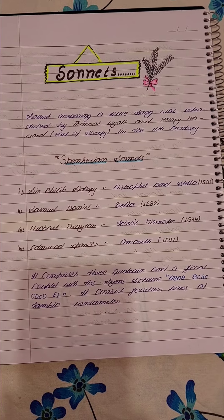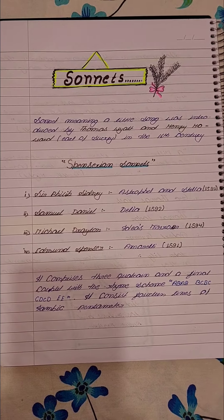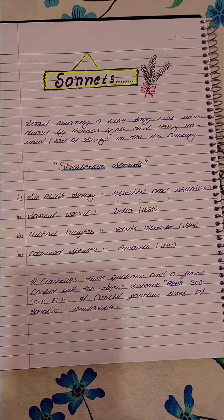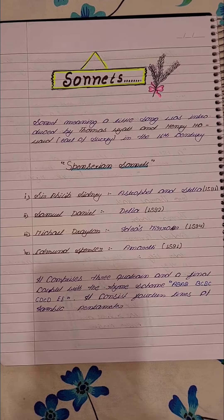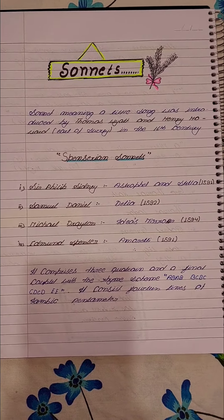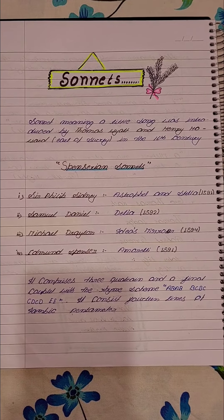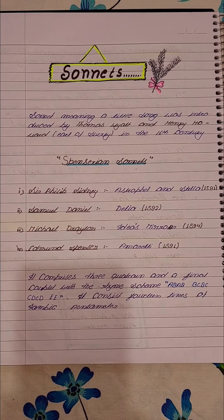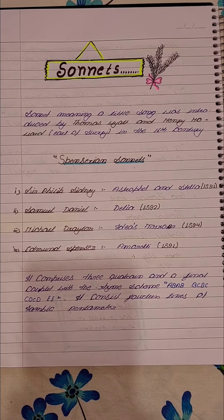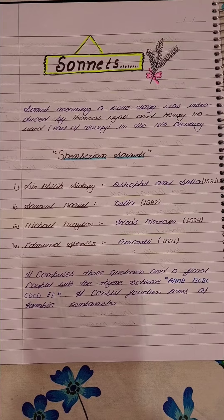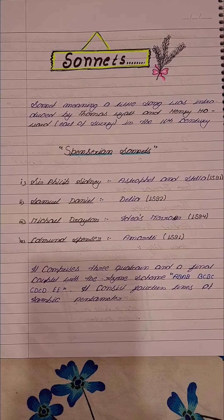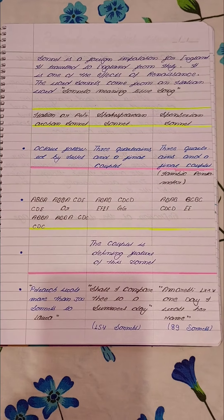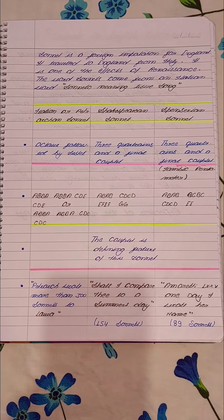The sonnet's origination was from Italy, and then after the Renaissance came to England, the sonnet also came to England. The sonnet was one of the effects of the Renaissance. The most credit for bringing the sonnet to England goes to Sir Thomas Wyatt and Henry Howard, who are the Earls of Surrey. When the Renaissance came to England, the sonnet traveled with it from Italy to England via Sir Thomas Wyatt and Henry Howard.